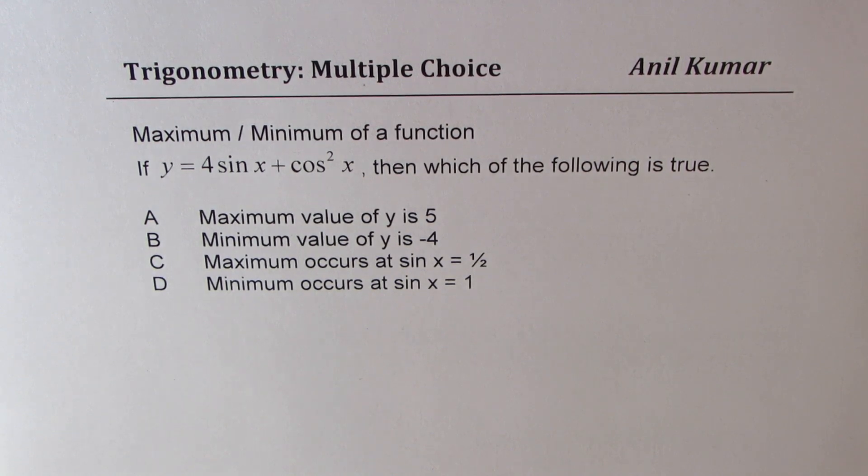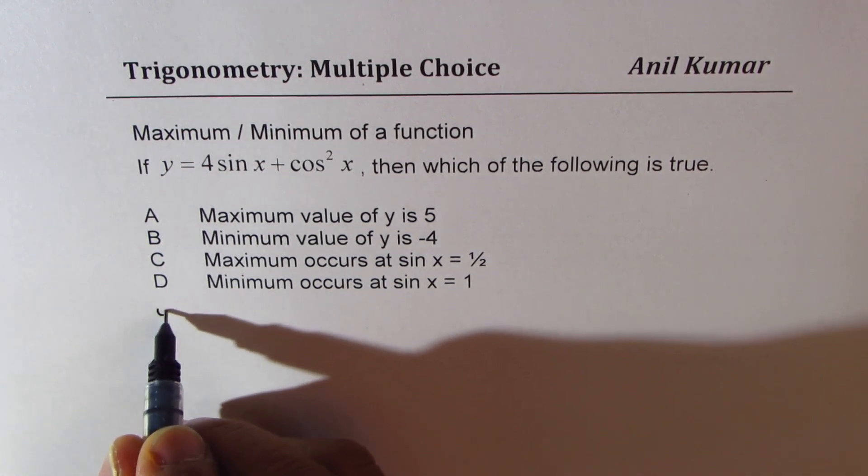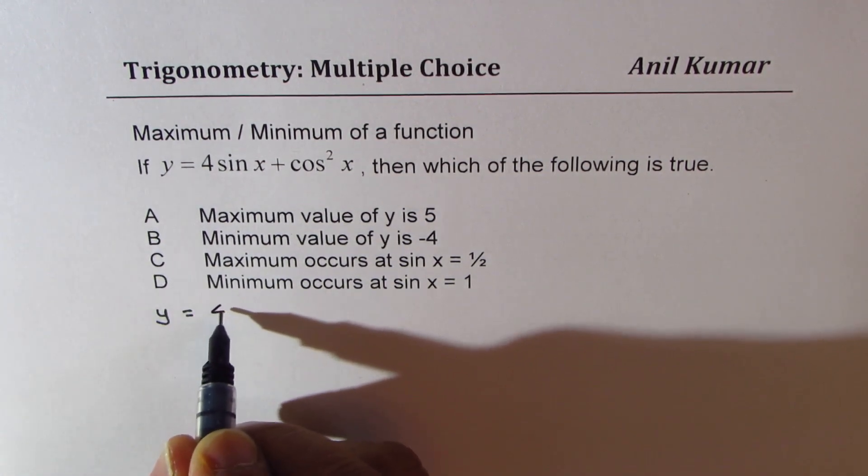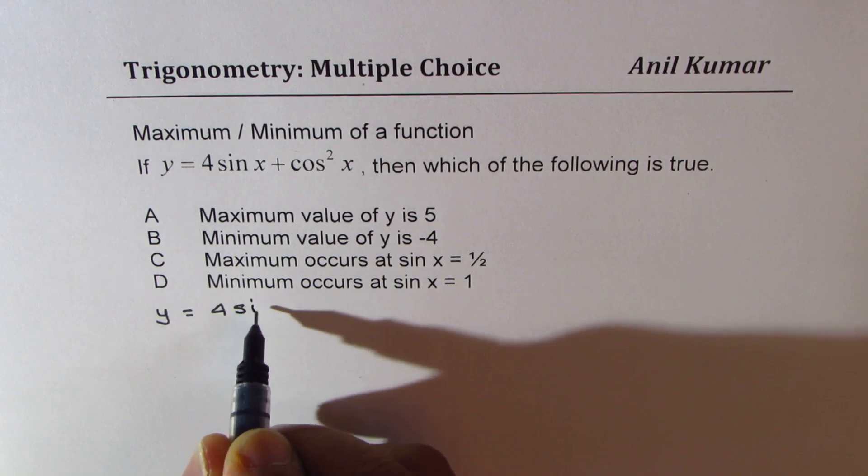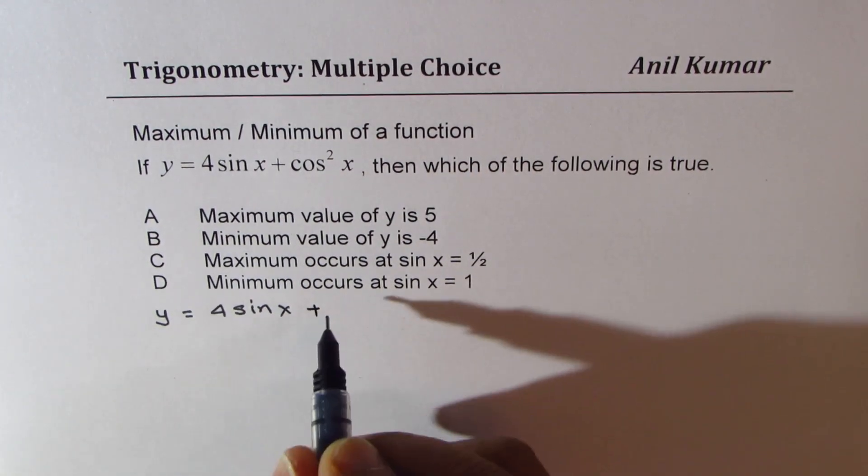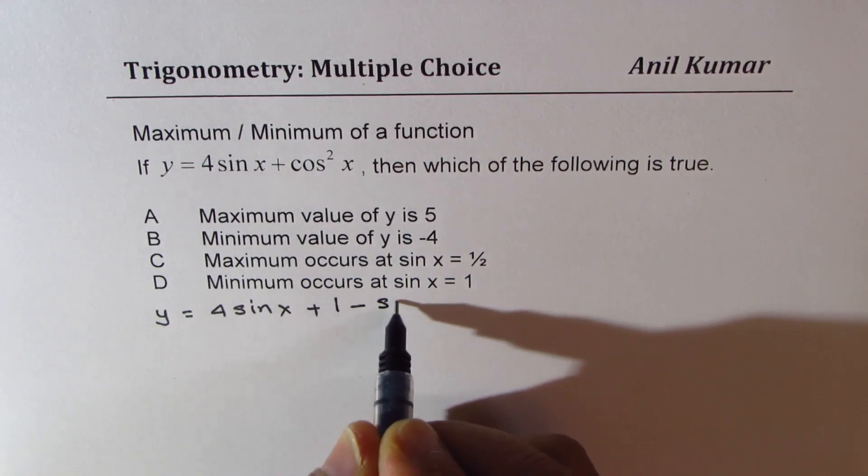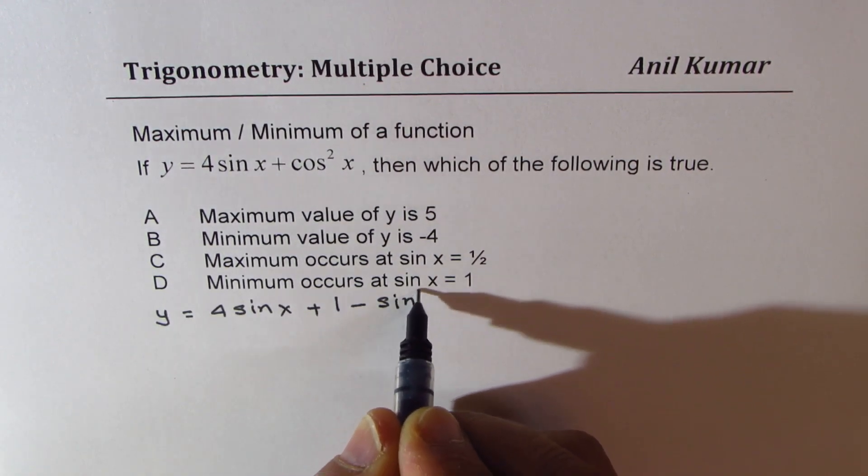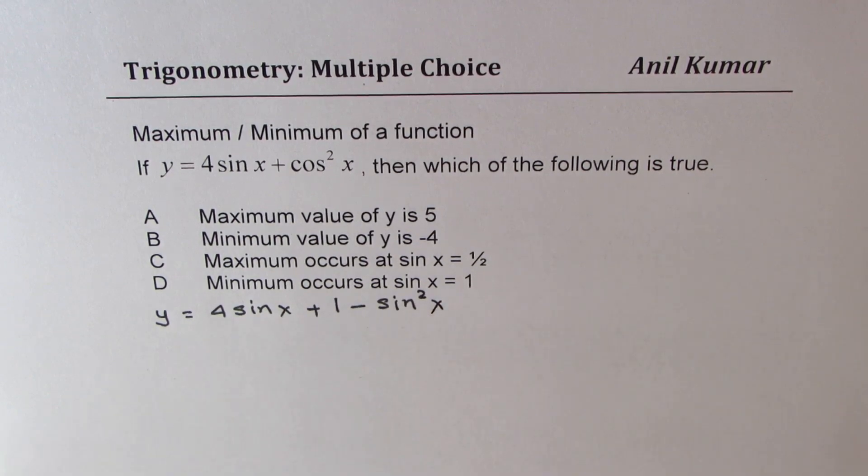Now, you could do it using calculus, but most students might not have done calculus. So for them, we'll use basic concepts of quadratic functions to solve this particular question. Let me rewrite this as y equals 4 sin x. Now, cos squared x could be written as 1 minus sin squared x.